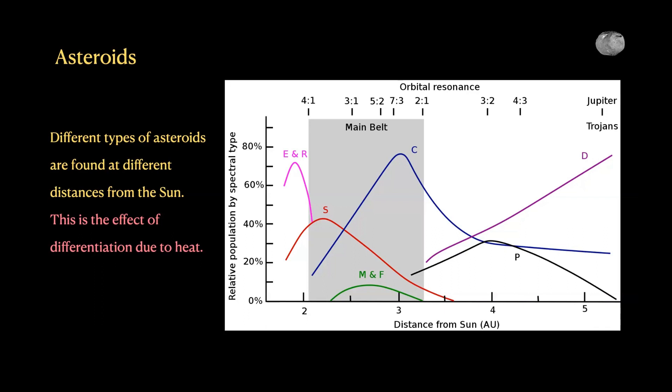If asteroids are big enough, there's enough heat produced inside due to radioactivity — like our Earth. Therefore it starts melting. Once it melts, the heavier elements settle to the center and light elements go outside. Asteroids nearer the sun undergo this process called differentiation due to heat. You produce silicate material on the surface, the core is more metal, and then the silicate surface goes away because of collisions, leaving only the metal asteroid. Asteroids farther away haven't differentiated because there isn't enough heat, so they retain carbon and metals mixed inside without settling down.